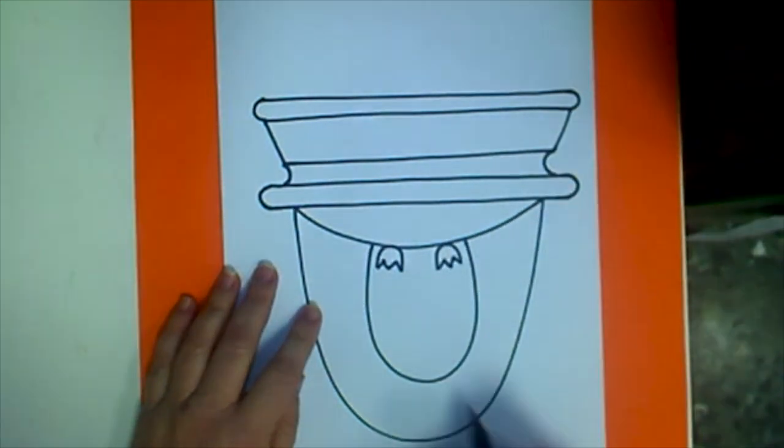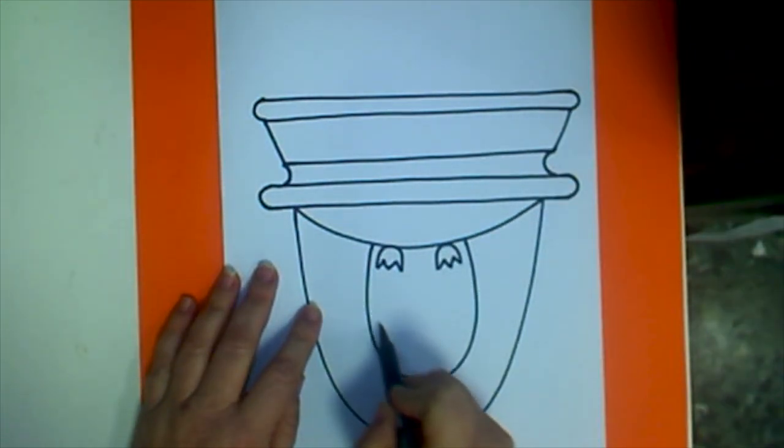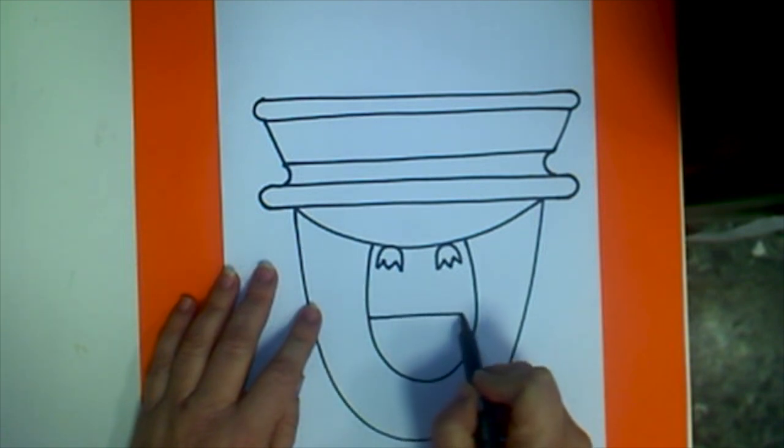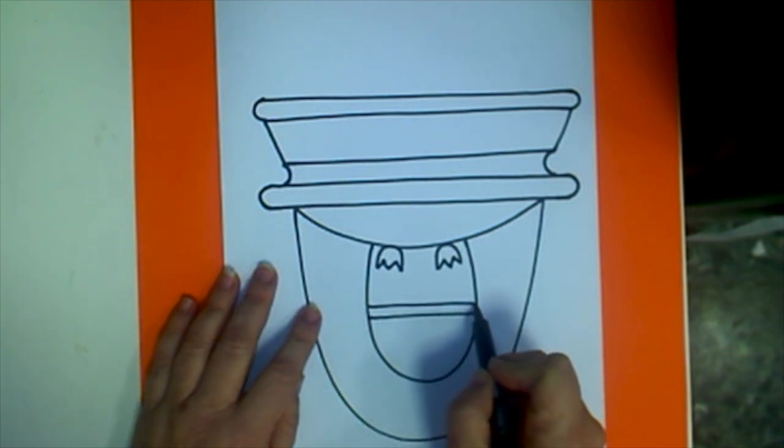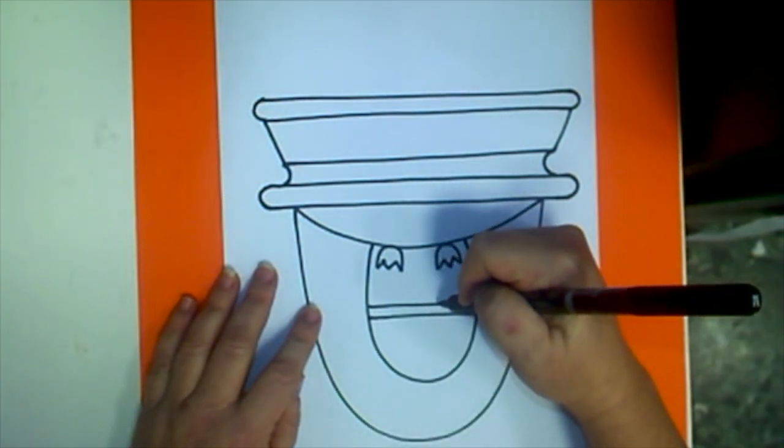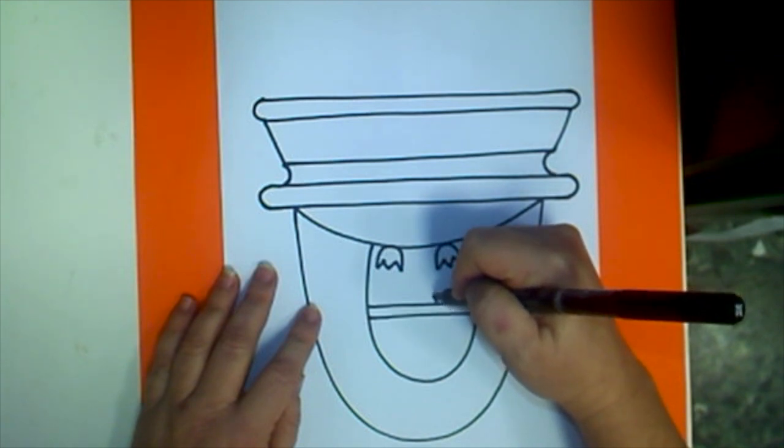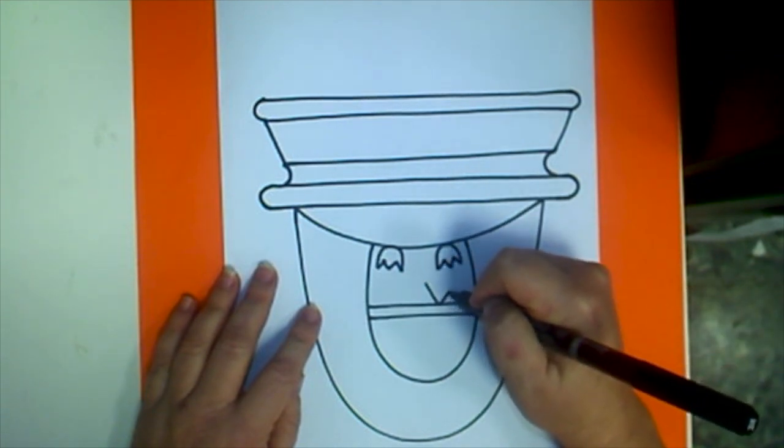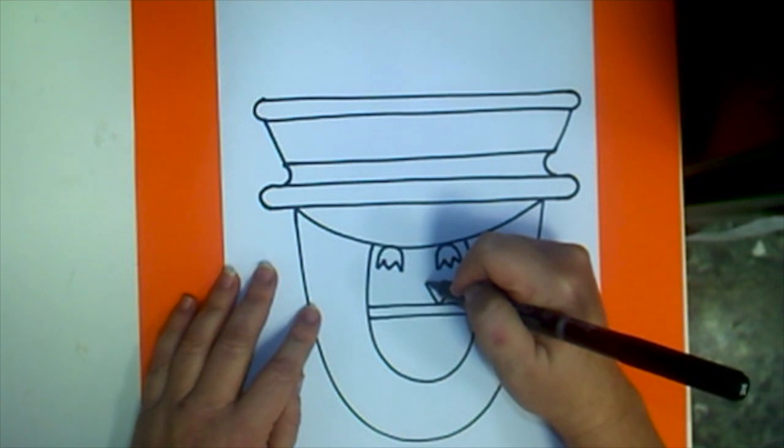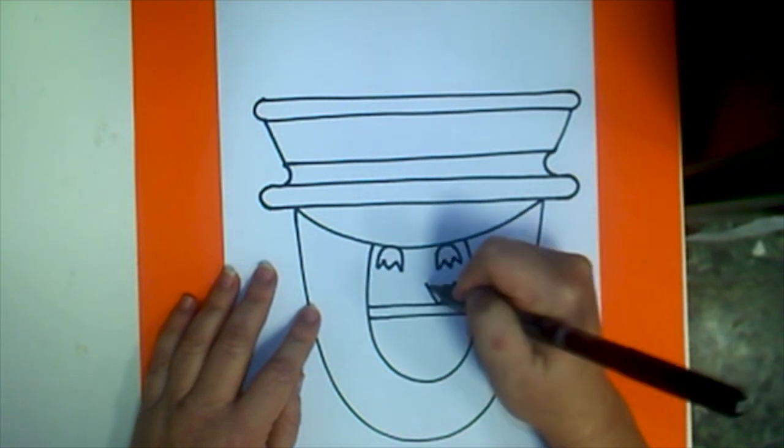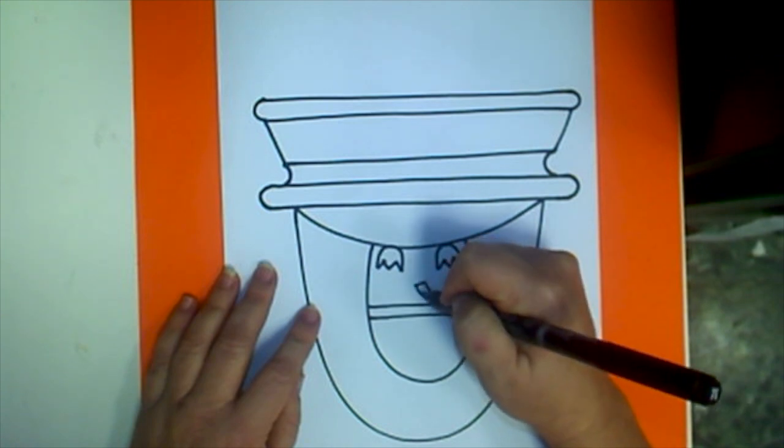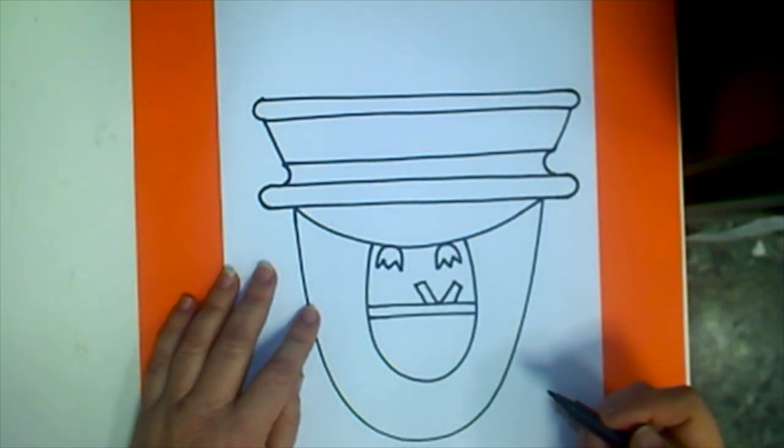Now I'm going to draw two horizontal lines going through the center of my U. These are also going to be parallel which means that they are not going to touch each other. Then I'm going to draw a letter V and then I'm going to add a little line at the end of that and come back into my horizontal line for each of those sides of the V.